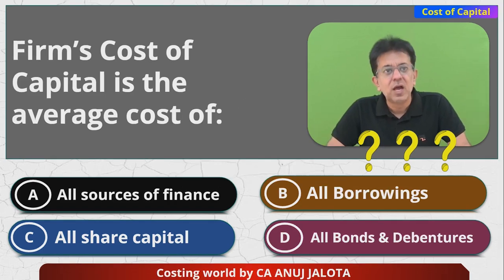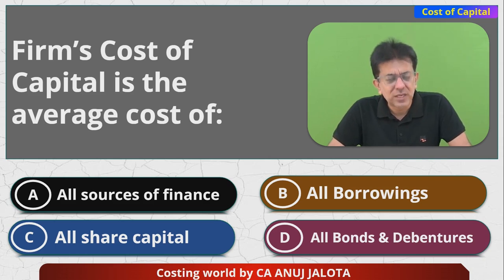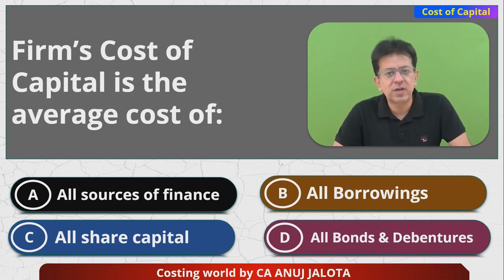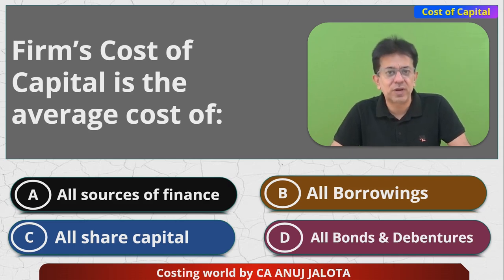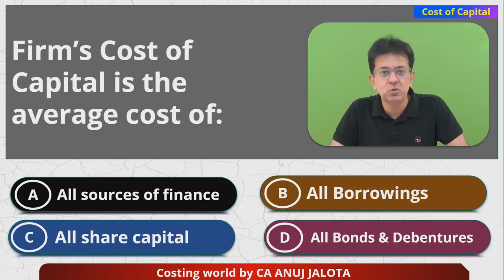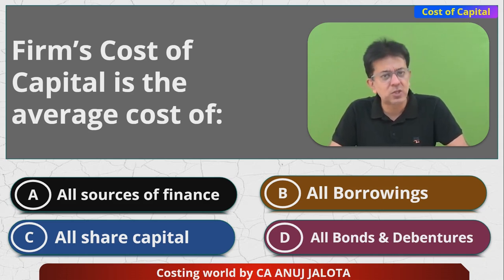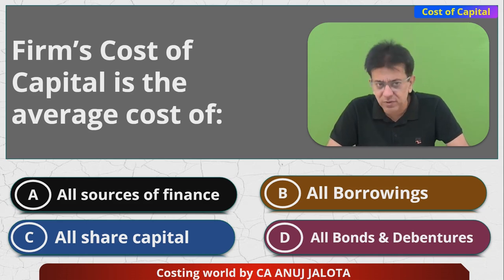In this case, your KO is nothing but Weighted Average Cost of Capital, or simply cost of capital, or composite cost of capital, or overall cost of capital — it is a weighted average of all the long-term sources of finance. Long-term sources of finance means equity, preference, debt, and reserves. Debt will include public deposits, debentures, bonds, and any long-term loans.